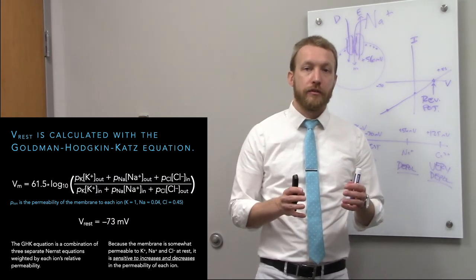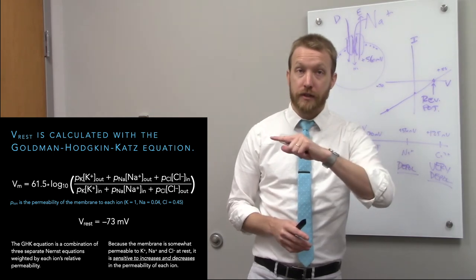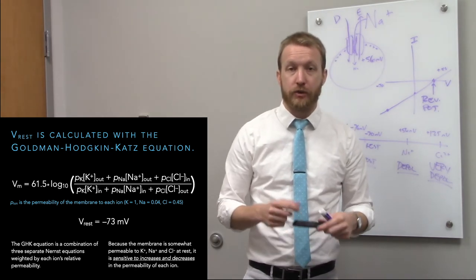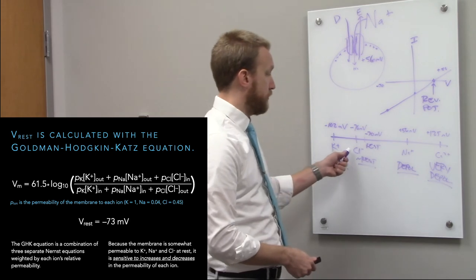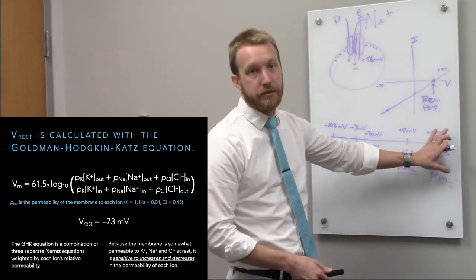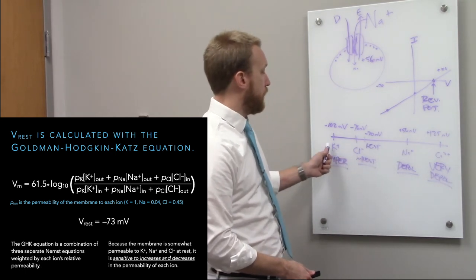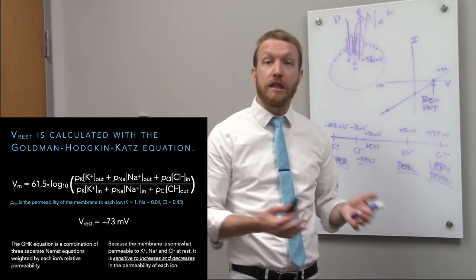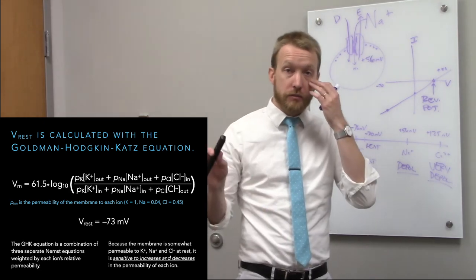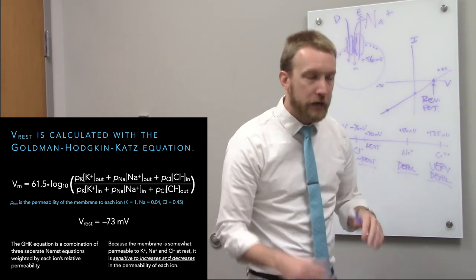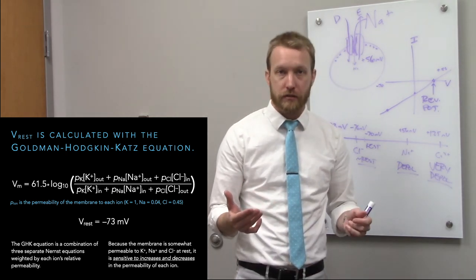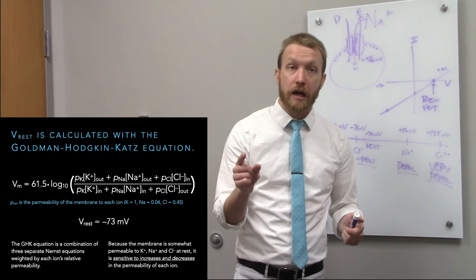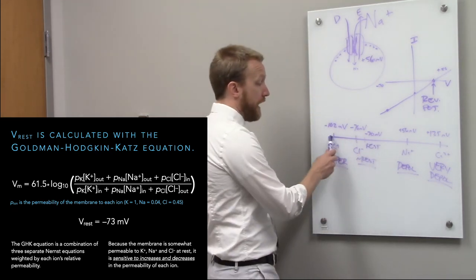We can put together three Nernst equations into the Goldman-Hodgkin-Katz (GHK) equation — it's just a weighted average of the reversal potentials for sodium, chloride, and potassium, weighted by how permeable the membrane is to each ion. If we change the permeability to any one of those three ions, the resting membrane potential moves toward that ion's reversal potential.